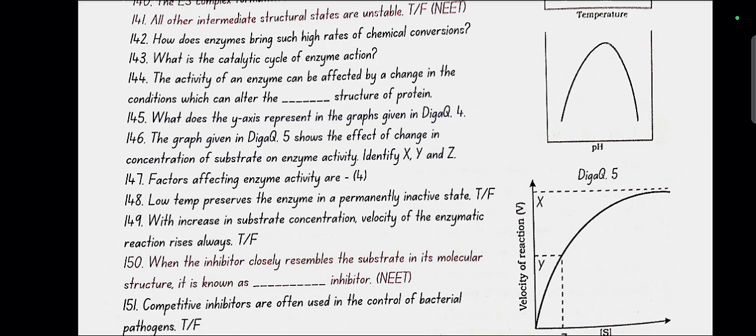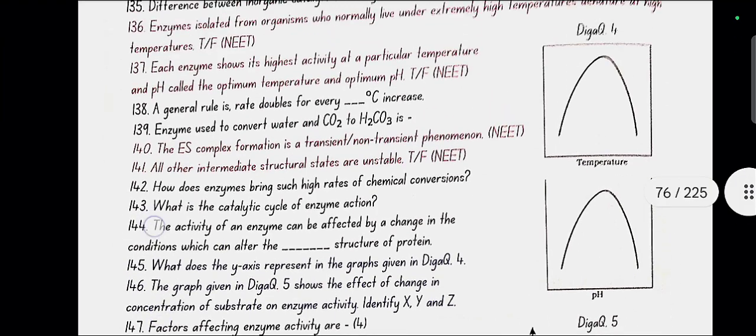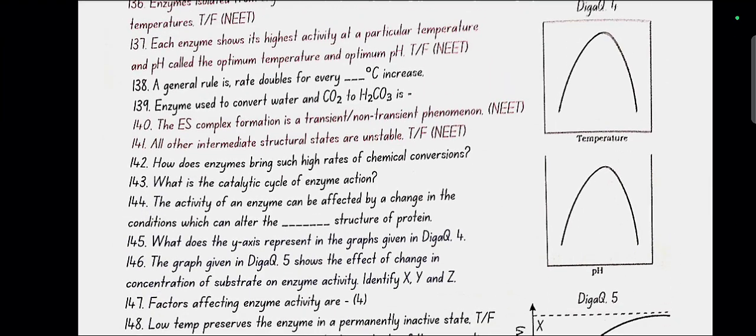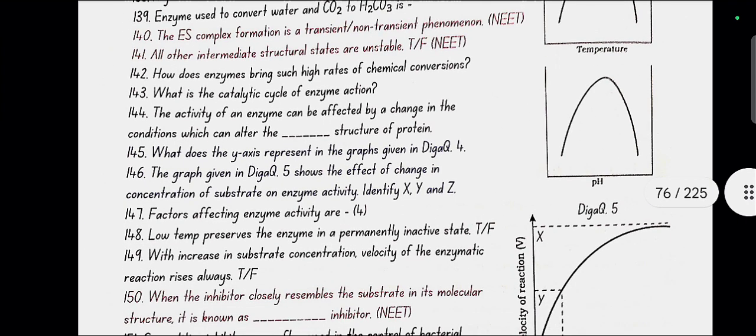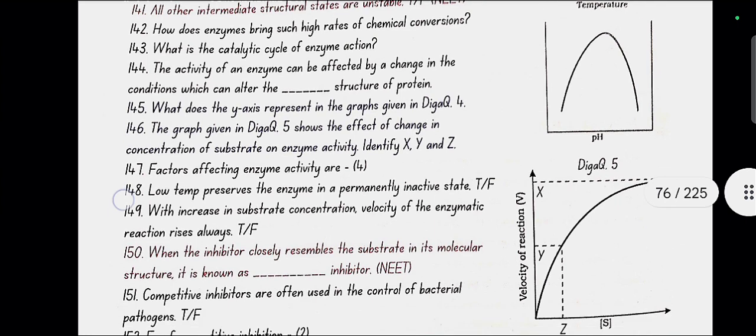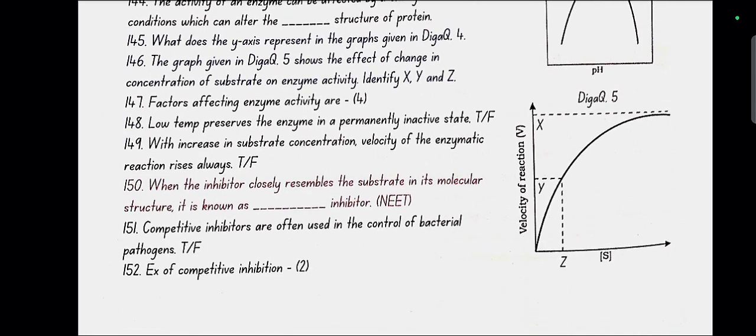What does the y-axis represent in the graph given in diagram 4? Y-axis gives the enzyme activity. The graph given in diagram 5 shows the effect of change in concentration of substrate on enzyme activity. Identify X, Y and Z. Here in diagram 5, X is Vmax, Y is Vmax by 2, Z is Km.